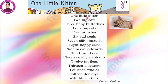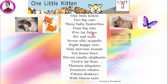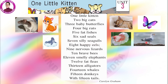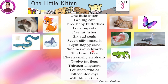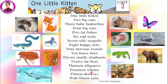This is how a kitten looks. So, one little kitten, two big cats, three baby butterflies, four big rats, five fat fishes, six sad seals, seven silly seagulls — this is how a seagull looks — eight happy eels, this is an eel, nine nervous lizards, this is how a lizard looks, ten brave bees, this is a bee, eleven smelly elephants, twelve fat fleas, thirteen alligators, fourteen whales, fifteen donkeys. So these are the animals.